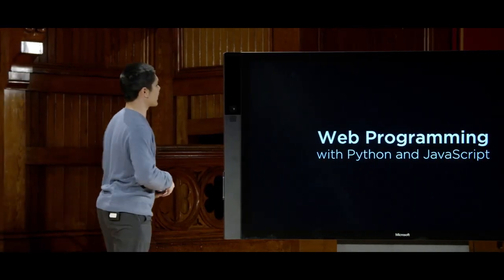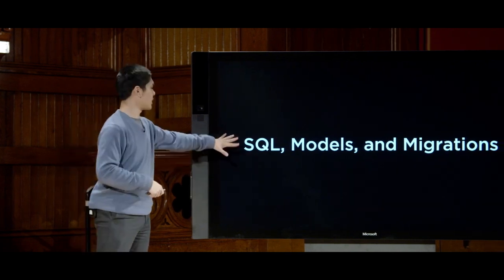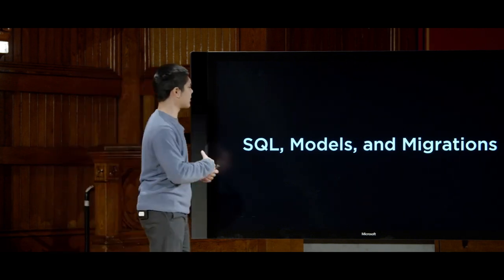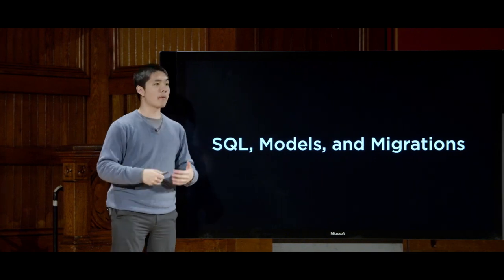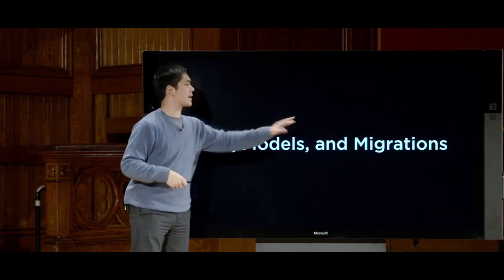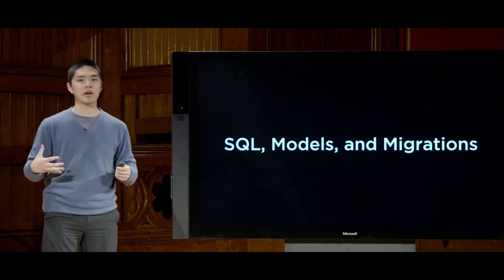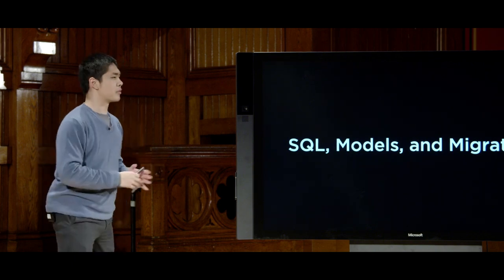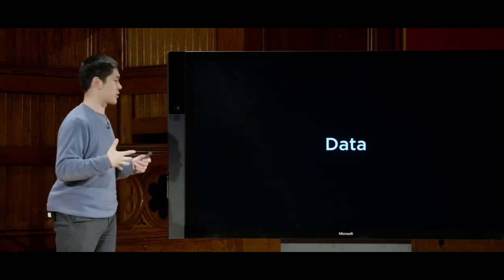But where Django gets especially powerful is as we start to delve into the world of data, trying to have web applications that store data inside of a database. To do that, we're going to introduce SQL, models, and migrations. SQL is a database language we can use to interact with databases, and Django provides an abstraction layer on top of SQL, letting us interact through Python classes and objects called models. Migrations allow us to update our database in response to changes in our models.